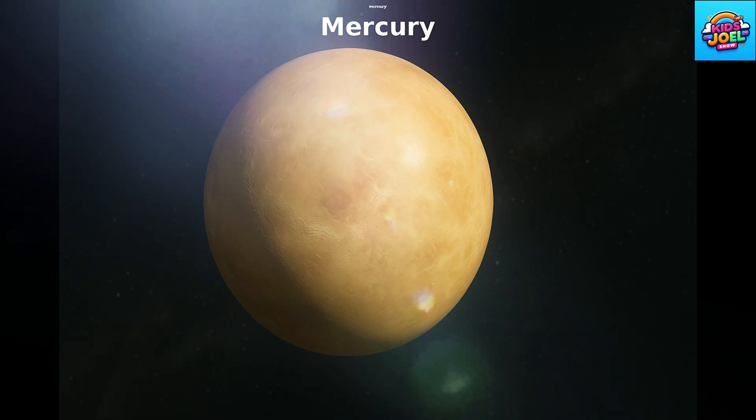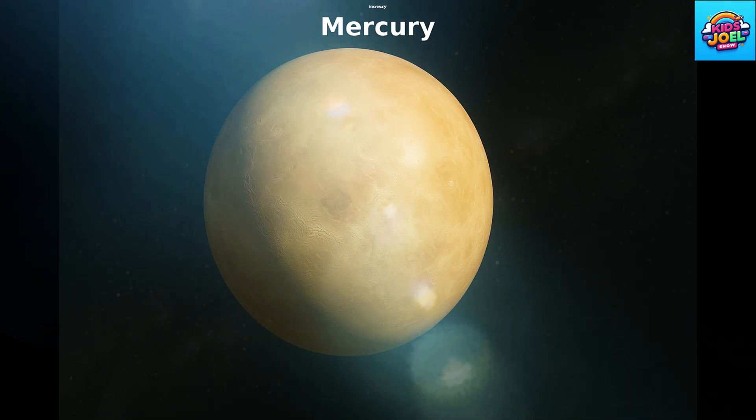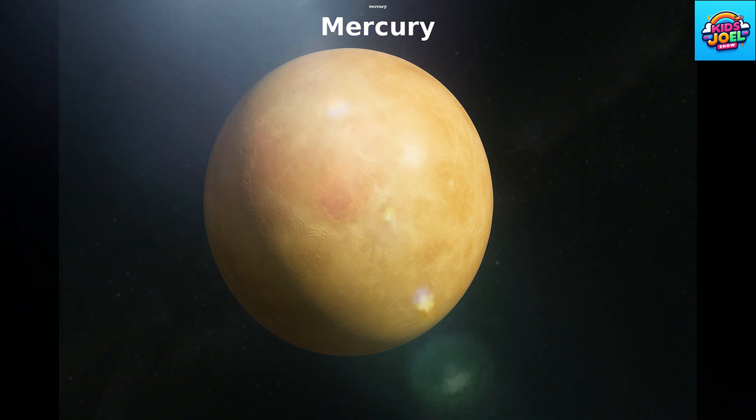Low limb Mercury is small and fast, closest to the sun, zooming past. No air, no clouds, just rocky ground, it zips around without a sound.